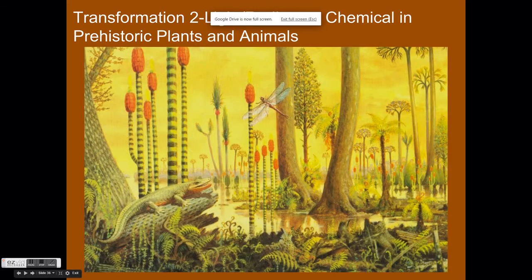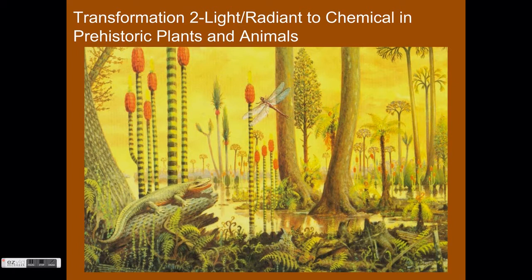For the second transformation, we have to look to the past. Believe it or not, the energy used to power a fan actually originated millions of years ago during prehistoric times. Ancient plants, often in the form of algae, convert light energy from the sun to chemical energy through a process called photosynthesis. Some animals will eat these plants and the chemical energy from the plants will transfer into the animals. So in our second transformation, light or radiant energy transfers to chemical energy in prehistoric plants and animals.